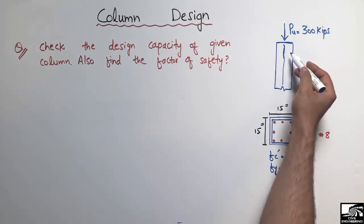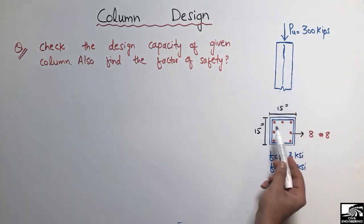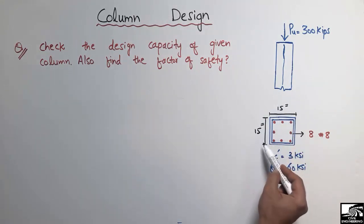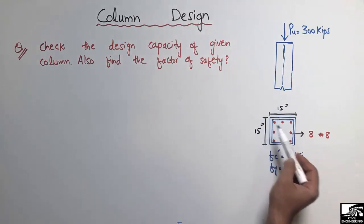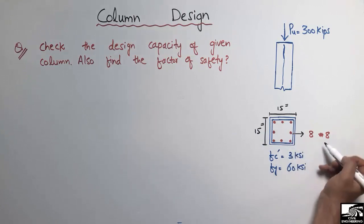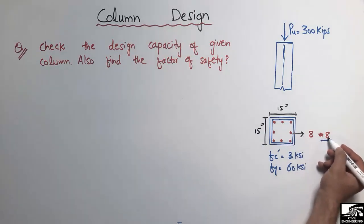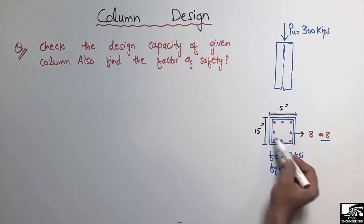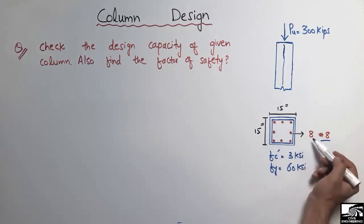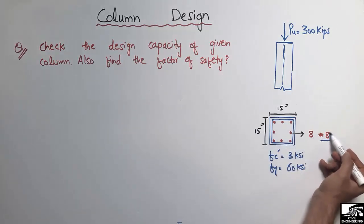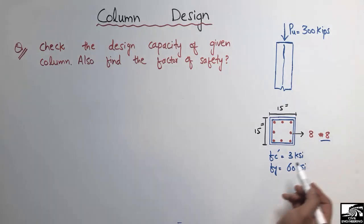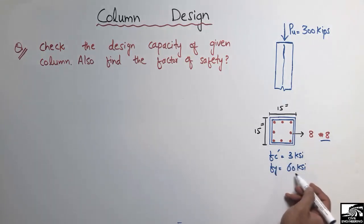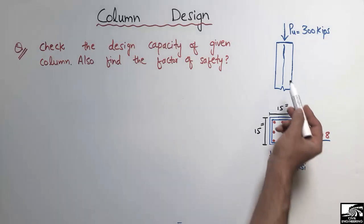The construction detail of this column is that it is 15 inches by 15 inches, which means it is a square column. Number 8 bars are used, and there are 8 bars distributed across the cross-section. The concrete strength is 3 ksi and 60-grade steel is used in this column.